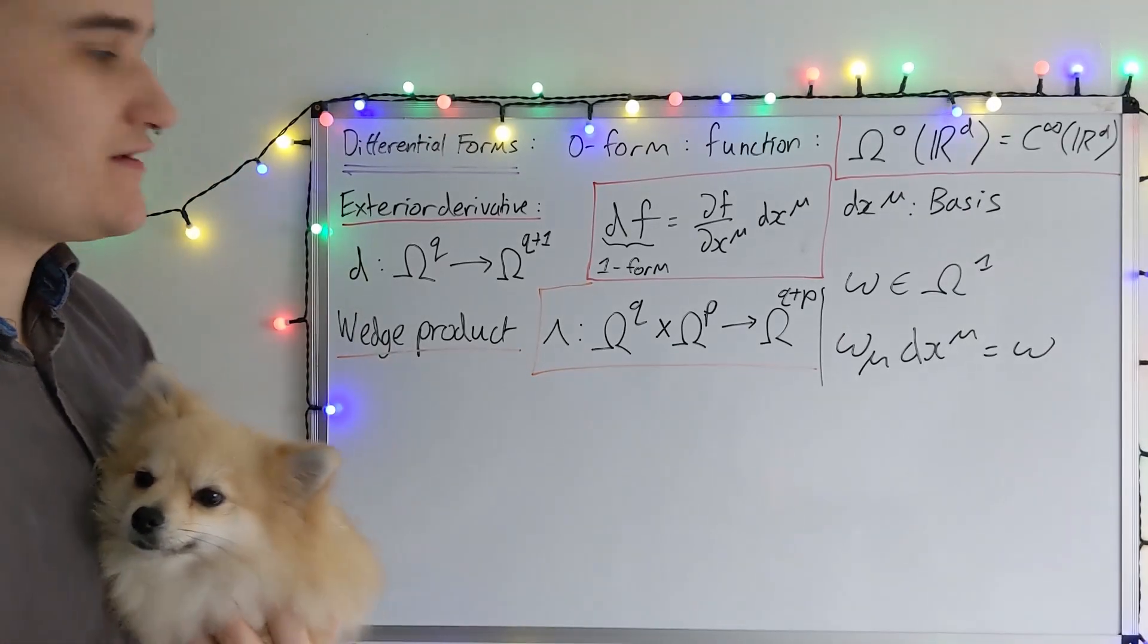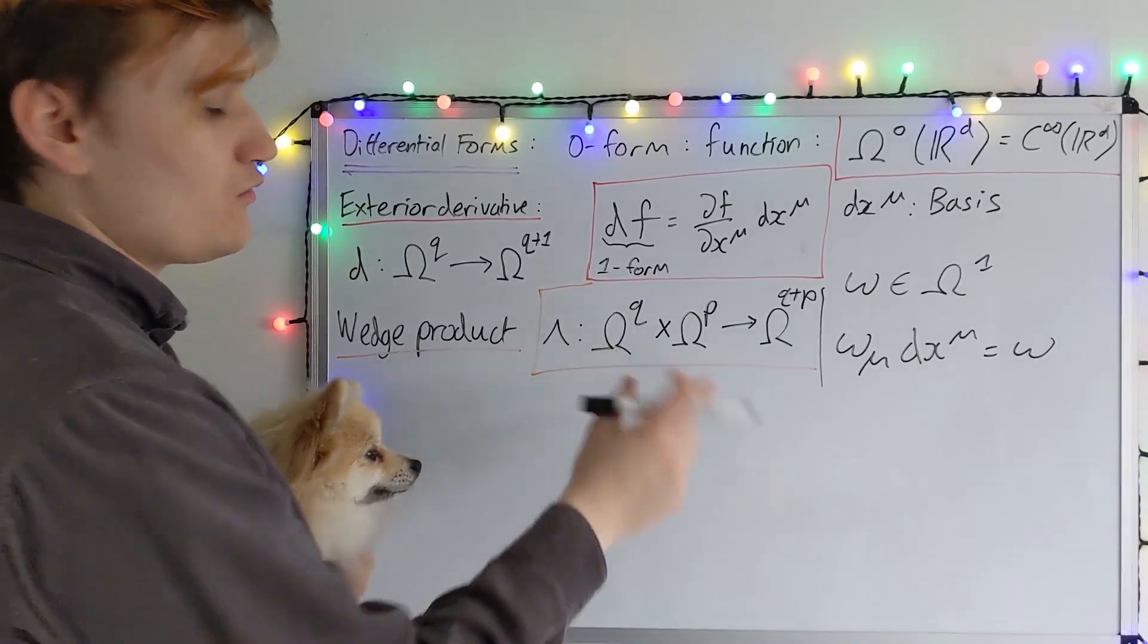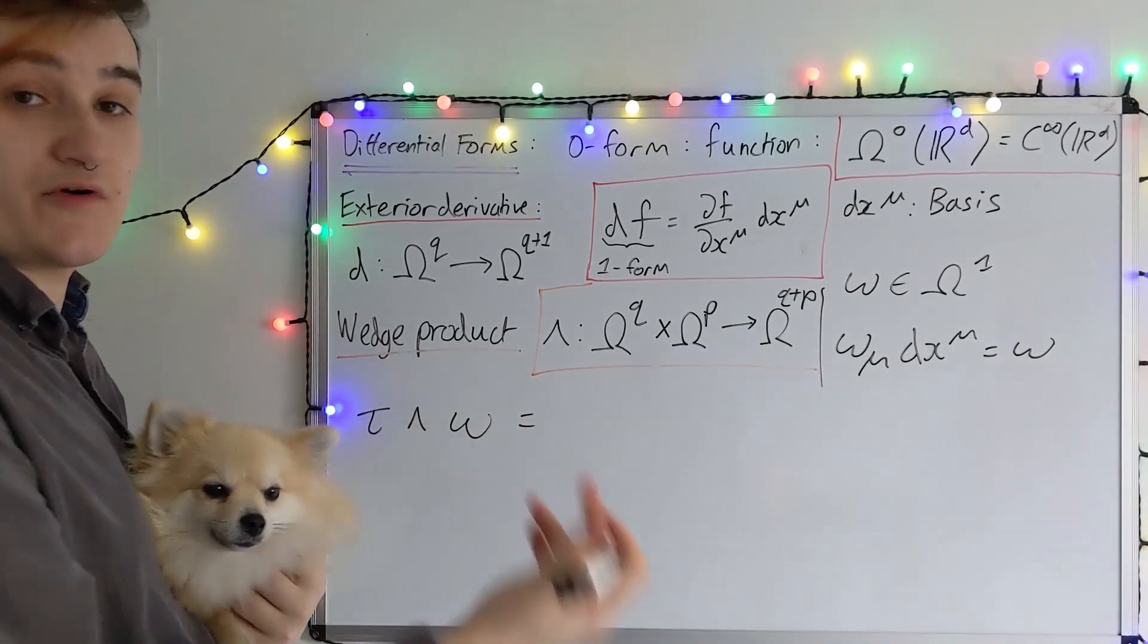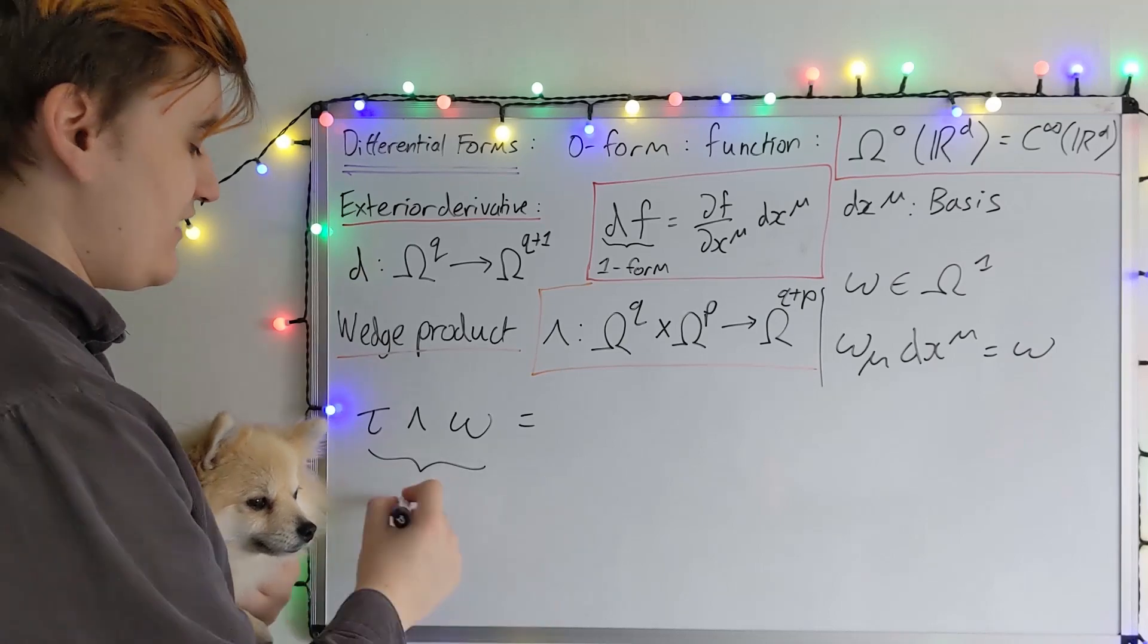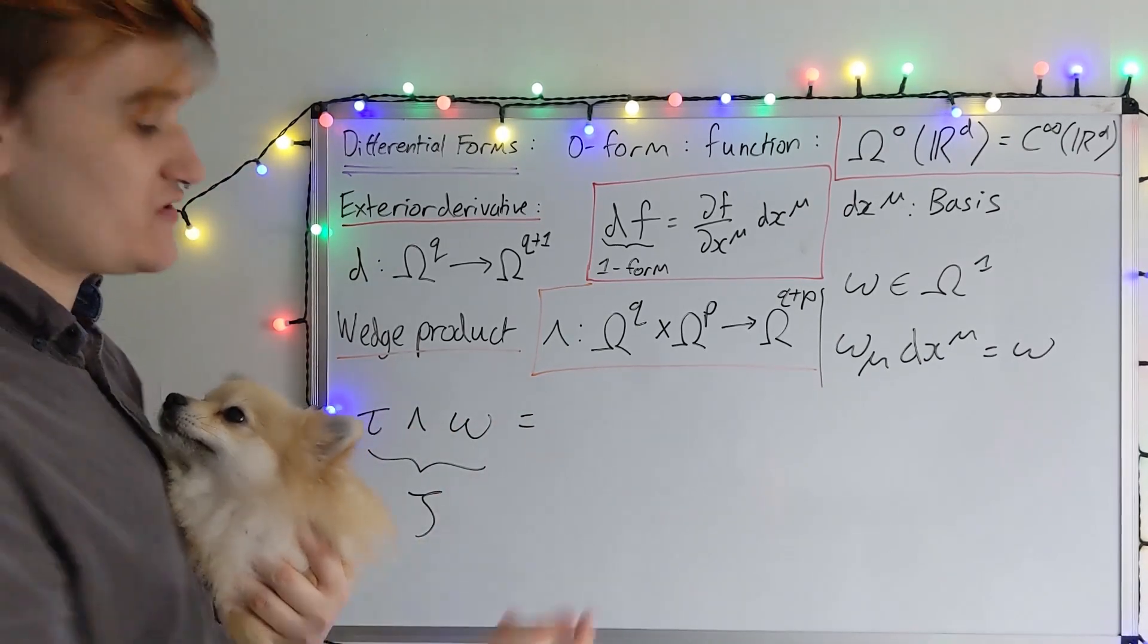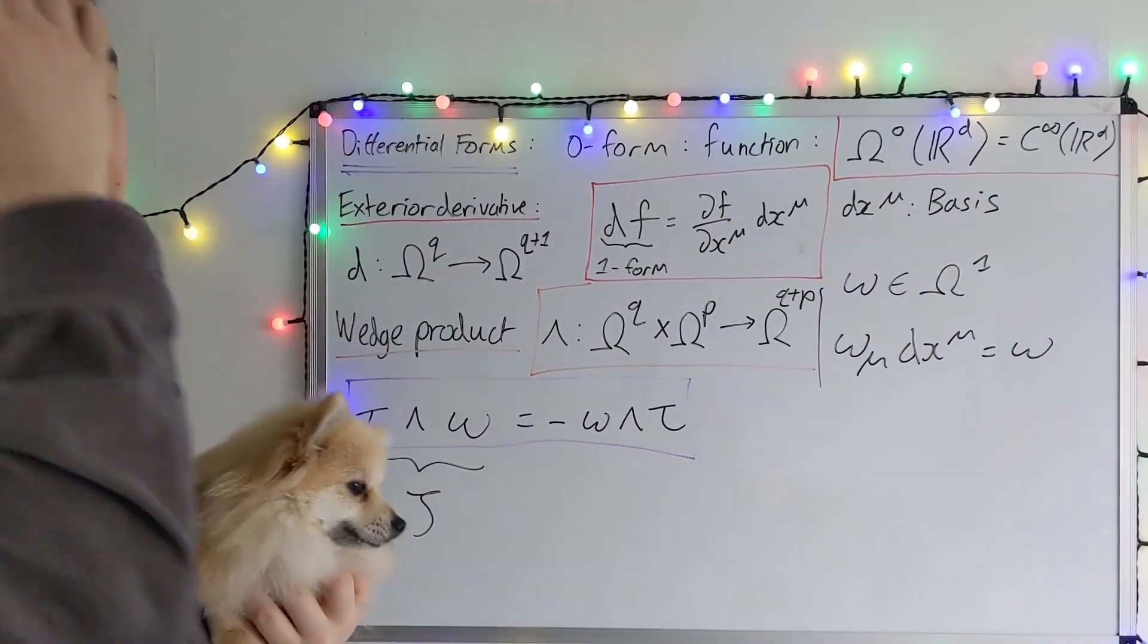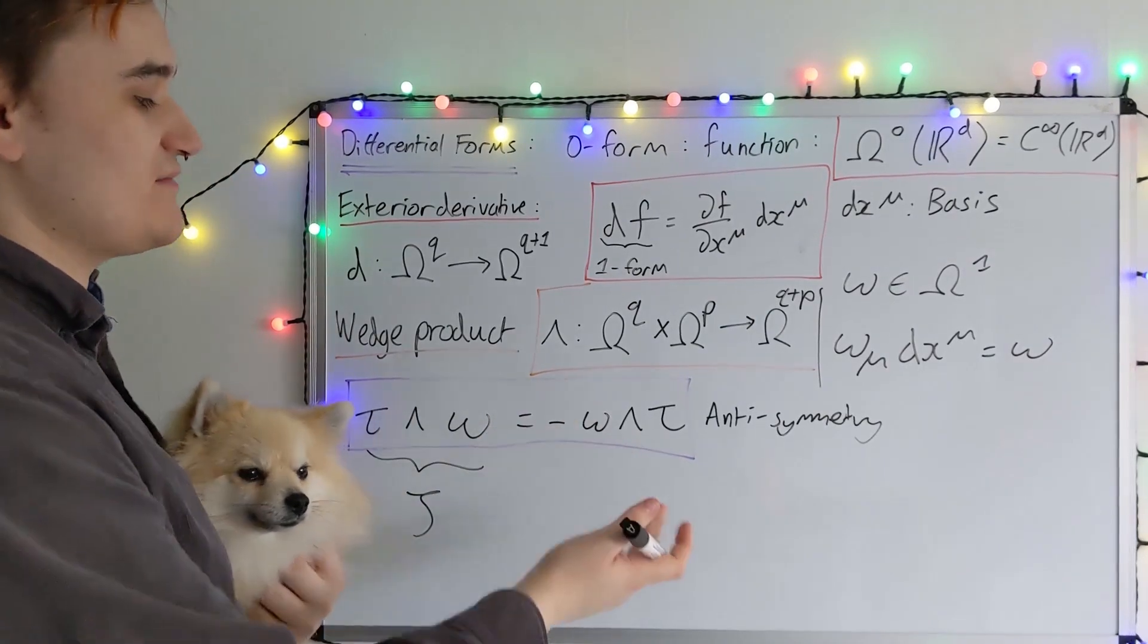So now this wedge product is a very special product. It has to be what's known as anti-symmetric. So if I just consider the wedge product now acting on one forms for the sake of simplicity. If I have two one forms, tau and omega, this wedge product is going to form a two form, since it's a one plus one equals two form. So I could say, call this two form, say zeta. But now this wedge product has to obey the anti-symmetry property, which means that if we swap these two one forms over, we have to pick up a minus sign. OK, so this is the key property that the wedge product has to satisfy, anti-symmetry. So the wedge product of any two one forms has to be anti-symmetric.